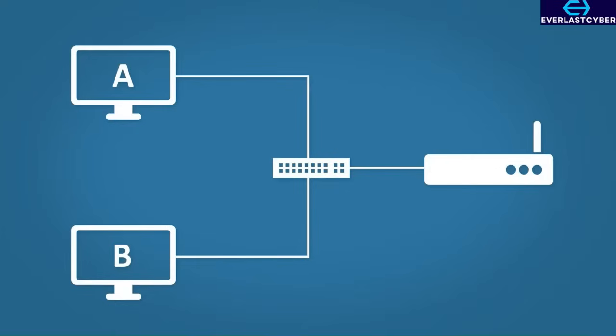Each computer will run a DHCP client, and this will allow the computer to ask for an IP address. Somewhere on the network, there will be a DHCP server — this is where the IP addresses are managed. DHCP servers can be run on routers or servers. At home, it's likely built into your router, but in an enterprise network, it is likely handled by a server.